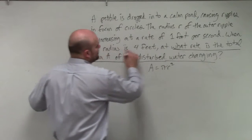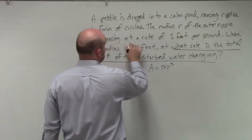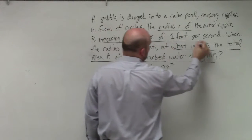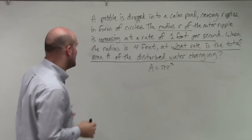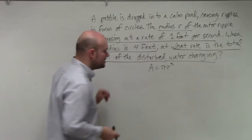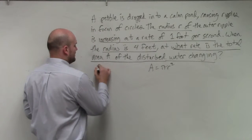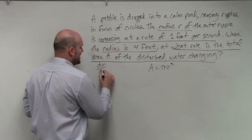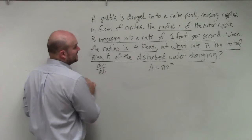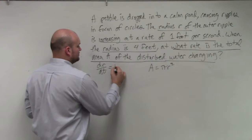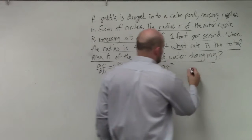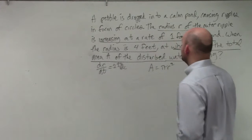We also know that the radius R of the outer ripple is increasing at a rate of one foot per second. And they also tell us that the radius is four feet. So a couple things that we know: the change in the radius, dr/dt, is one foot per second, and we know that R is equal to four feet.